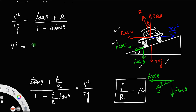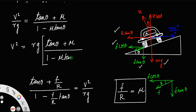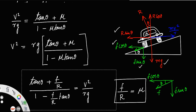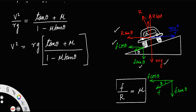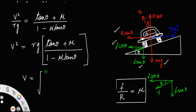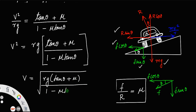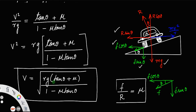Therefore, v² / rg equals (tan theta + mu) divided by (1 − mu tan theta), so v² equals rg times (tan theta + mu) divided by (1 − mu tan theta). Taking the square root, v equals the square root of rg(tan theta + mu) / (1 − mu tan theta). This is the expression for the velocity of a car or vehicle on a banked road.